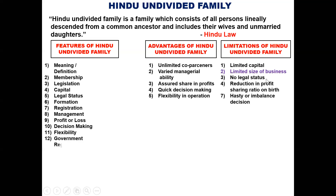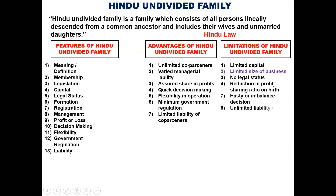Government regulation: Is it strict? No. That is an advantage — minimal government regulation. Liability: Co-parceners have limited liability, but the Karta has unlimited liability — his personal property can also be at risk. Audit is not compulsory — that is a valid point. Taxes are low — up to 0.5 lakh is exempt, so low taxes is an advantage.